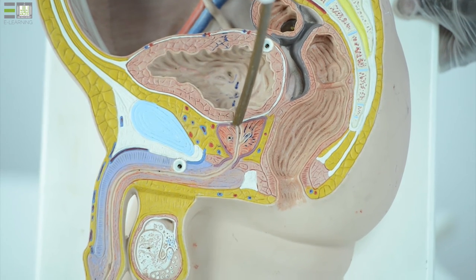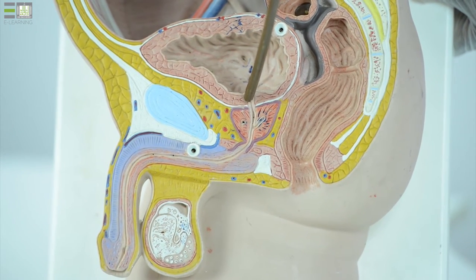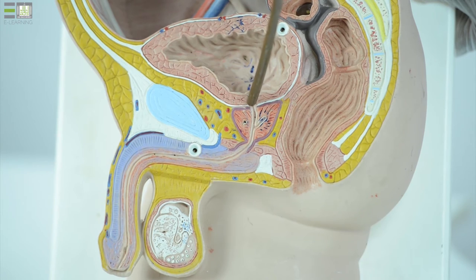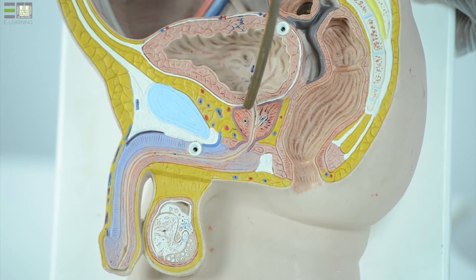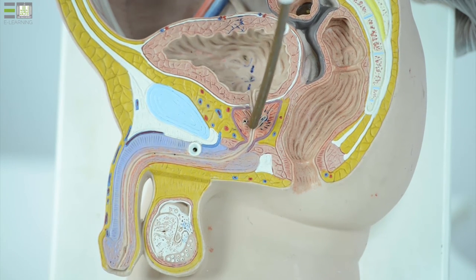The urethra starts here at the lower part of the urinary bladder, passes through the prostate to form the prostatic urethra which is about 4 cm.